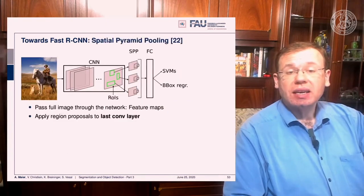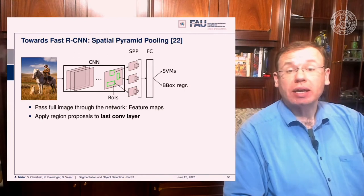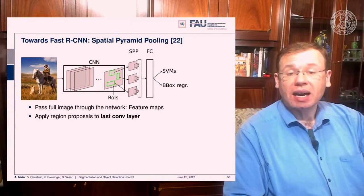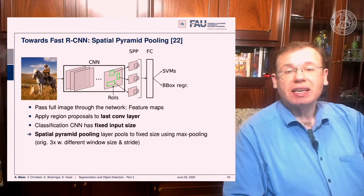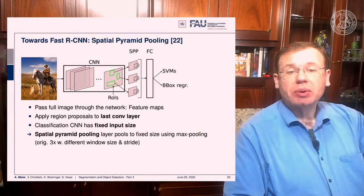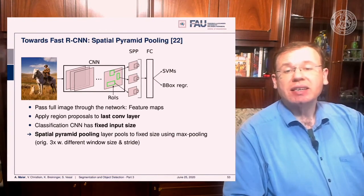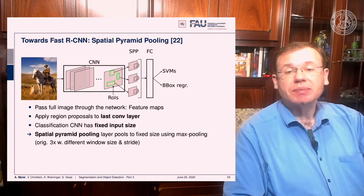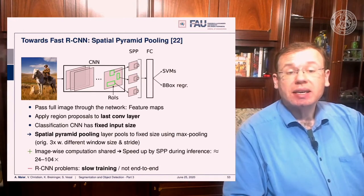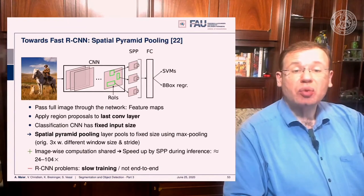The approach is to pass the entire image through the network to generate feature maps, then apply region proposals to the last convolutional layer. You resize the ROIs to match that layer using spatial pyramid pooling with max pooling. This was originally done with three different window sizes and strides. By sharing the image-wise computation, inference can be accelerated by a factor of 24 to 104.